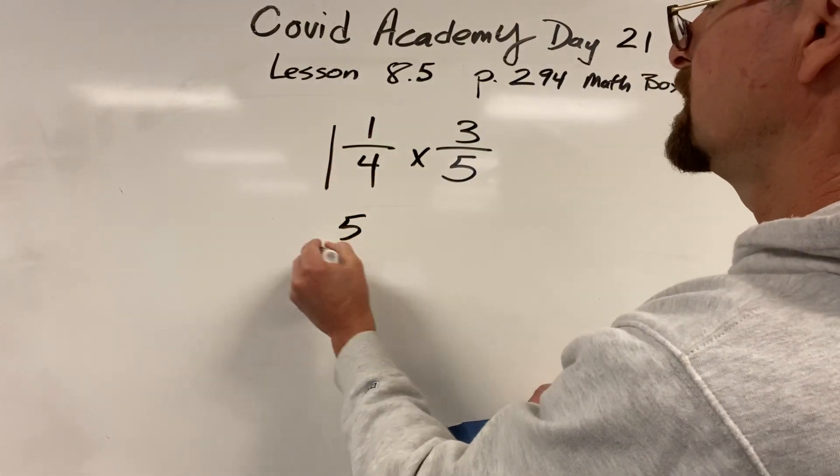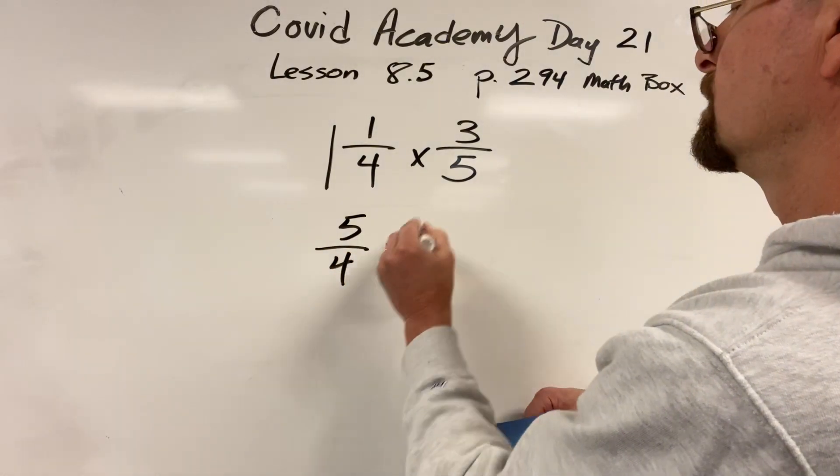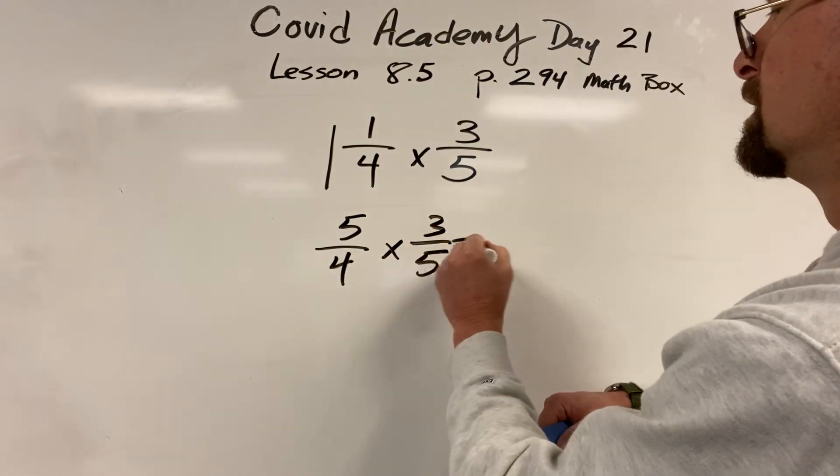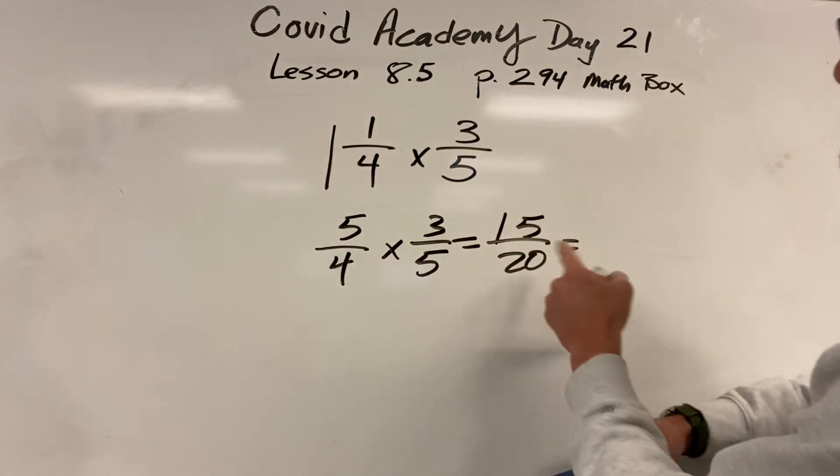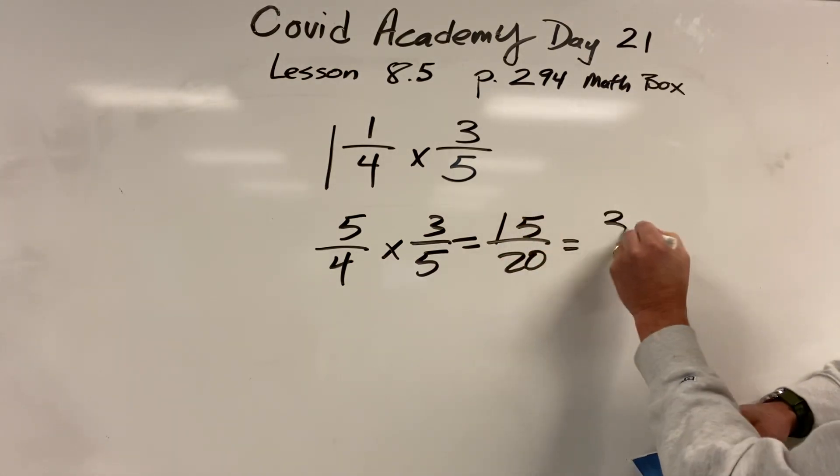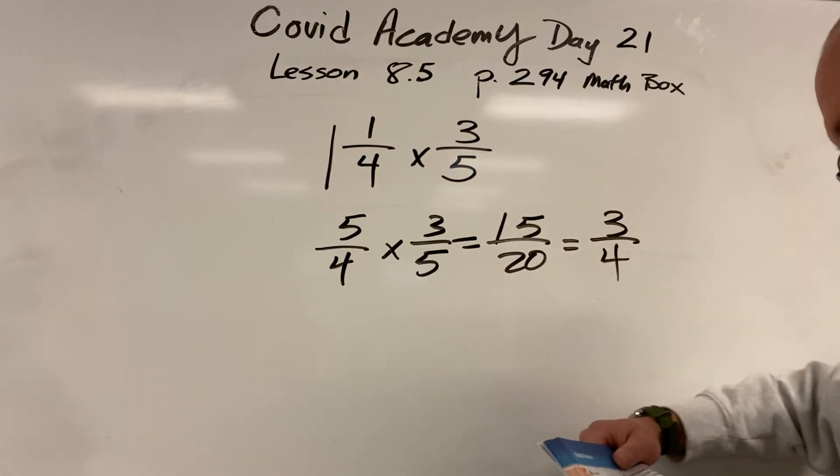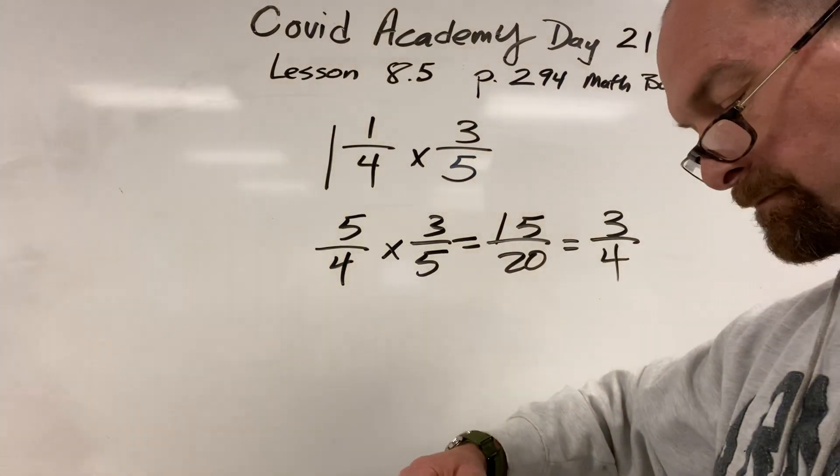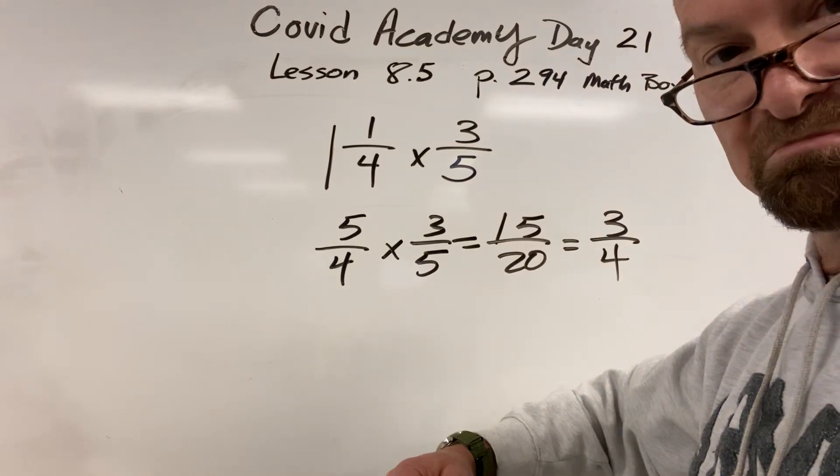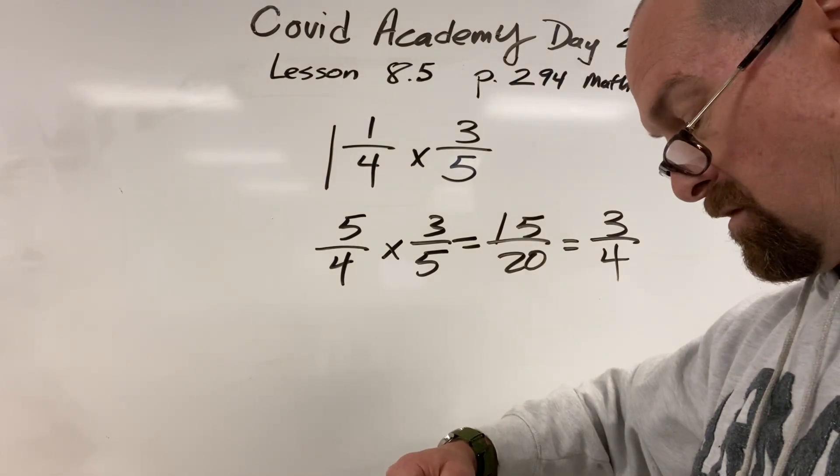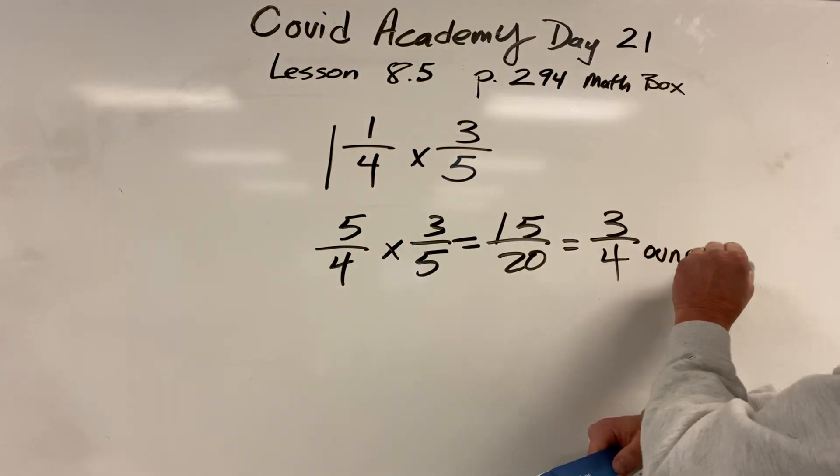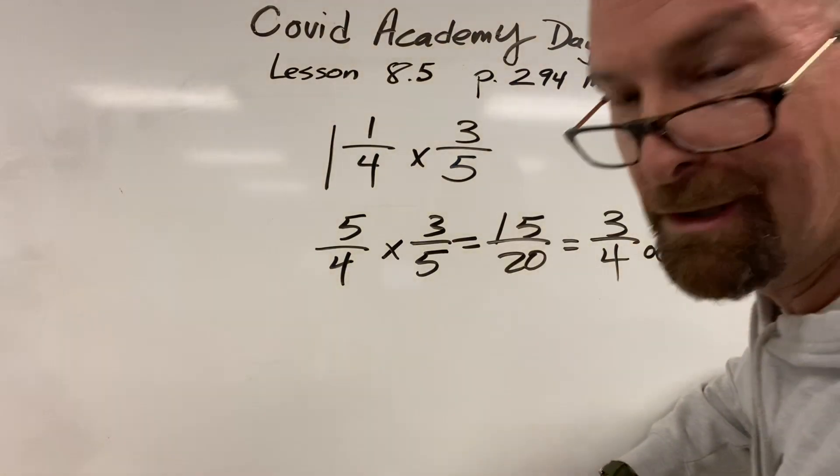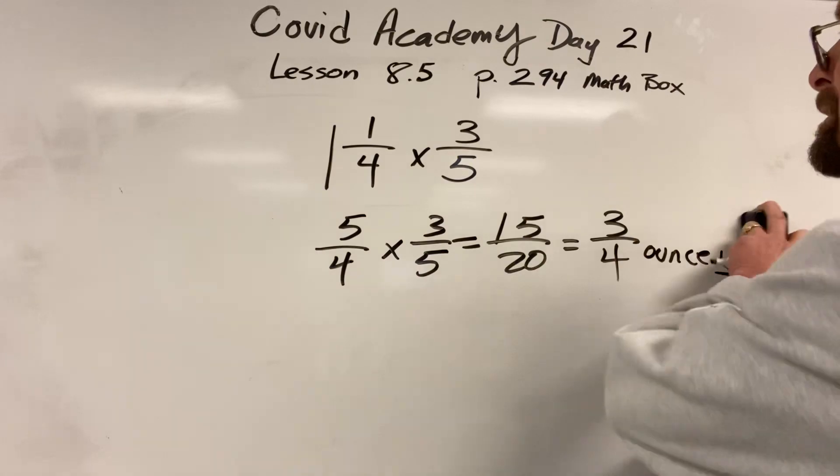Let's make that improper, which is 5 fourths times 3 fifths. That's 15 twentieths. Divide each one by 5. He's got 3 fourths of an ounce. Cool for him, huh? That's his answer. 3 fourths ounces. Write that unit. Write the unit, people. You've got to write the unit.